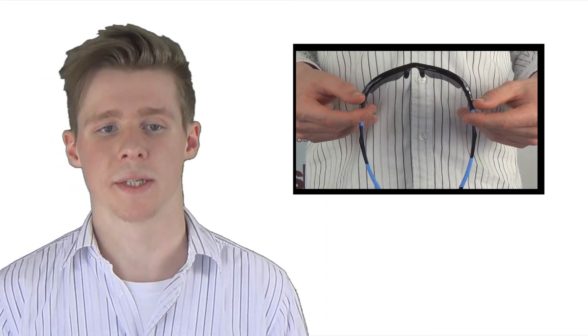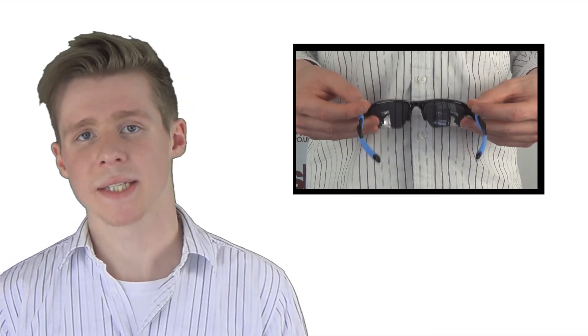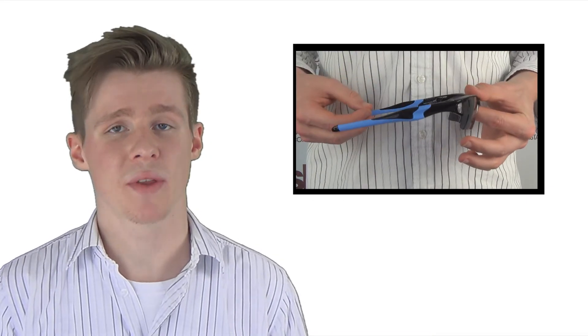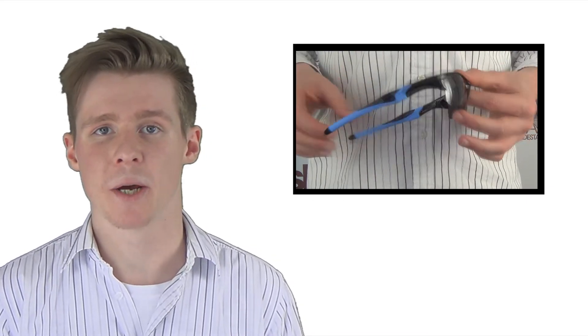In regards to the Half Jackets, you get the same technology you do with the Radar Locks, the Unobtainium, the O-Matter frames, things like that. You can also change your lenses over quite simply. You don't get any switchlock technology that you do with the Radar Locks, but it is really simple to change over and it will probably only take you about 5 to 10 seconds longer.